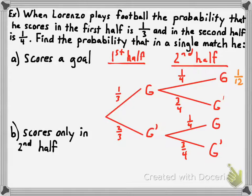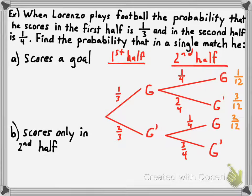The probability he scores in the first half but not the second is 1/3 times 3/4, which is three-twelfths. The probability he doesn't score in the first half but does in the second is 2/3 times 1/4, which is two-twelfths. The probability he doesn't score at all is 2/3 times 3/4, which is six-twelfths. I prefer not to simplify yet so I can verify: 1/12 + 3/12 + 2/12 + 6/12 = 12/12, confirming we've covered 100% of possibilities.